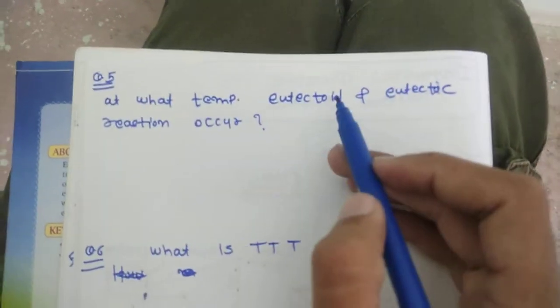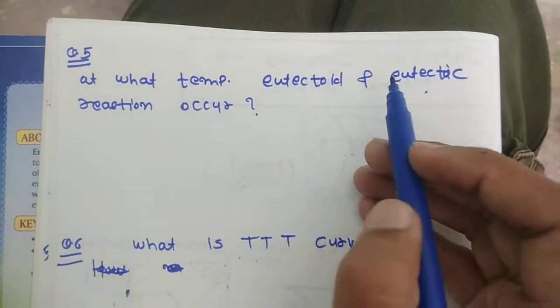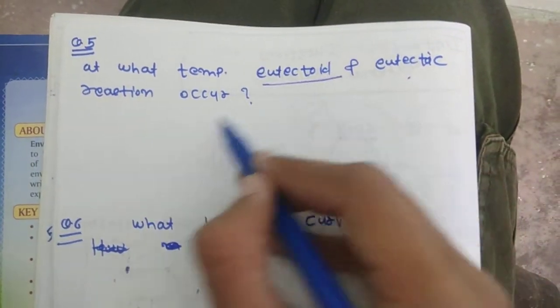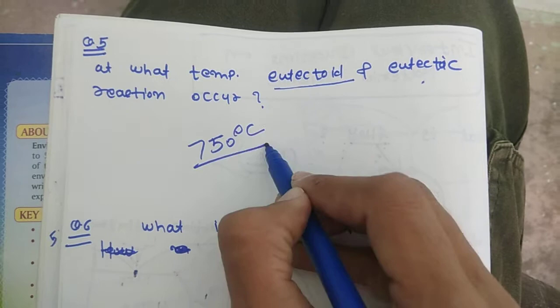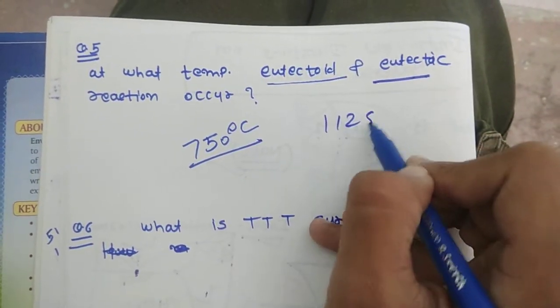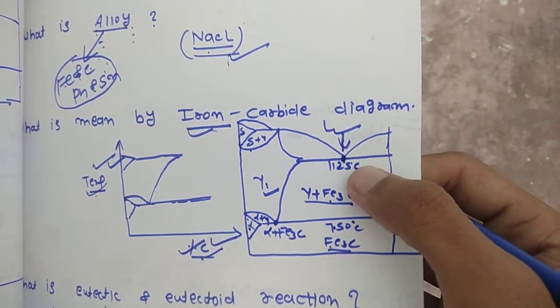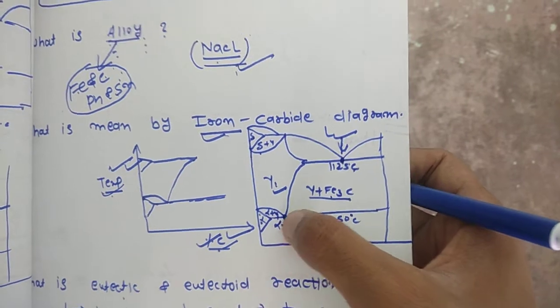The fifth question: at what temperature do the eutectoid and eutectic reactions occur? The eutectoid reaction occurs at 750 degrees centigrade, and the eutectic reaction occurs at 1125 degrees centigrade. We can also see these temperatures on the iron-carbon diagram — 1125°C is the eutectic point and 750°C is the eutectoid point. You must remember these temperatures.